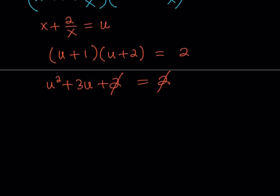Awesome. Now all I have to do is factor out the u here and you've got the solutions. So one of the solutions is going to be u equals 0 and the other one is going to be u equals negative 3. But what is u? u is x plus 2 over x.